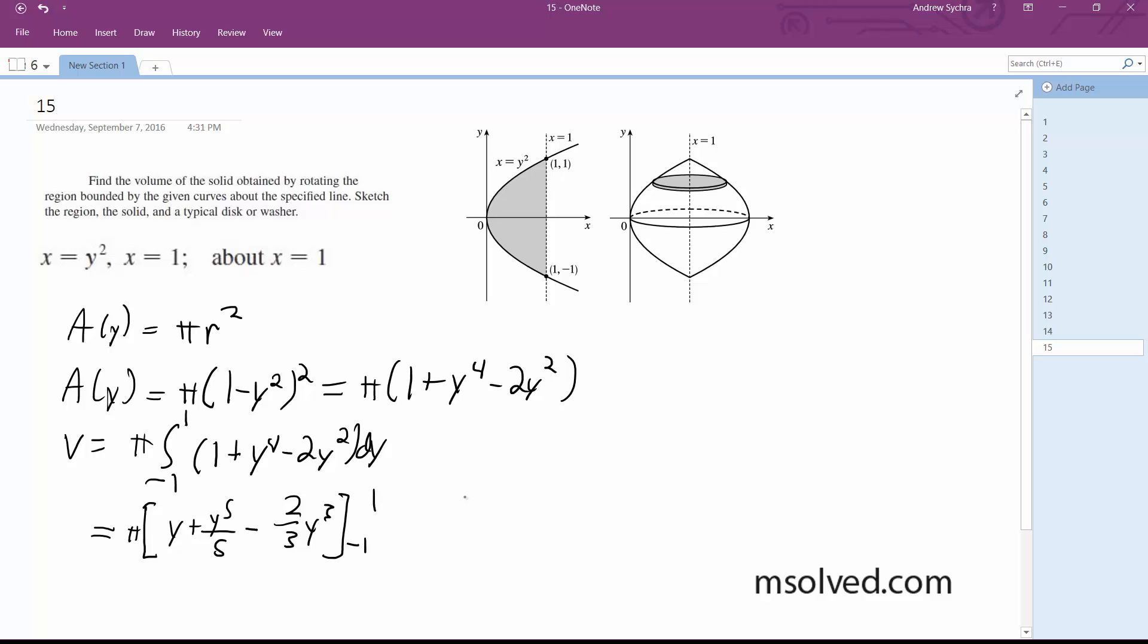From negative 1 to 1. Finally, we get pi times (1 plus 1/5 minus 2/3 plus 1 plus 1/5 minus 2/3), and this all sums down to 16 over 15 pi. That's it.